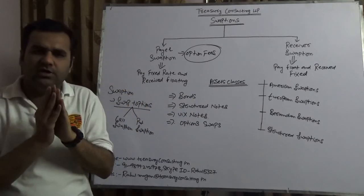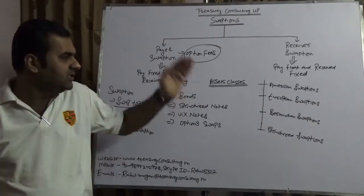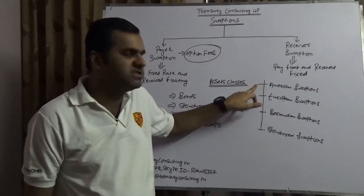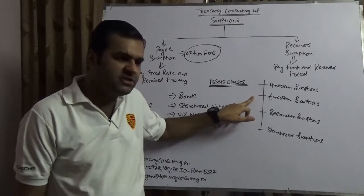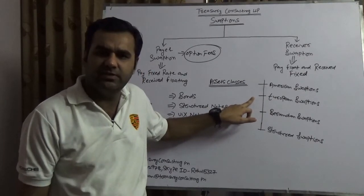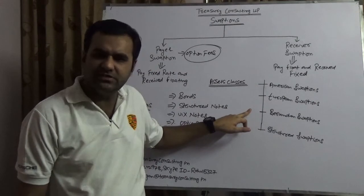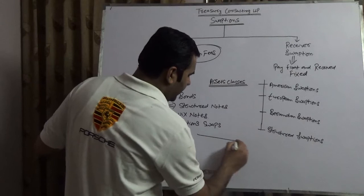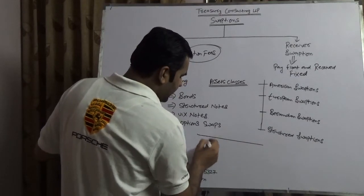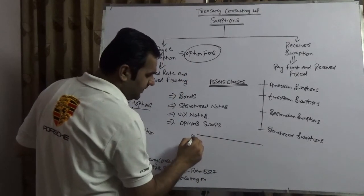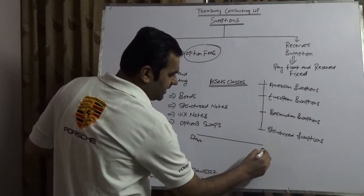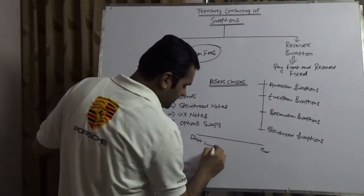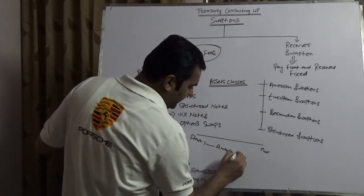On the basis of settlement, swaptions are further categorized into four parts: American swaptions, which can be settled anytime; European swaptions, which can be settled only at maturity; and Bermudian swaptions, where you have different settlement timelines. If you draw a timeline, American swaption means you can exercise anytime from the start period to the end period.